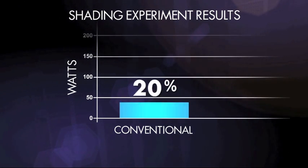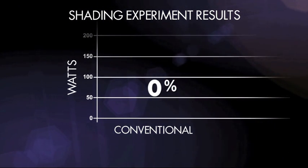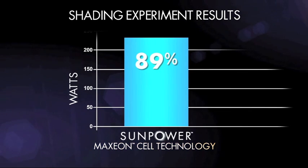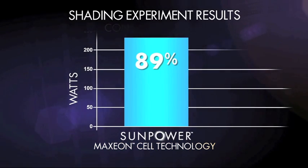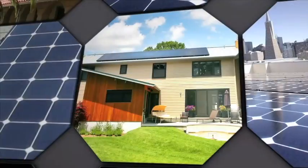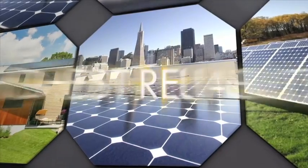But SunPower's Maxeon technology has built-in protection for each cell, ensuring consistent power production even if shading continues. Bottom line: SunPower panels are designed for the real world.